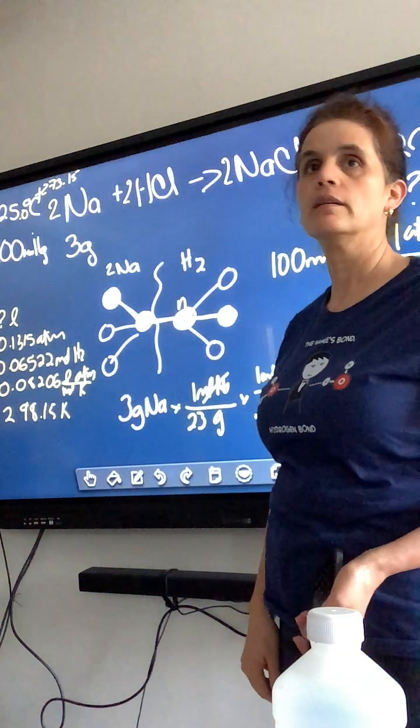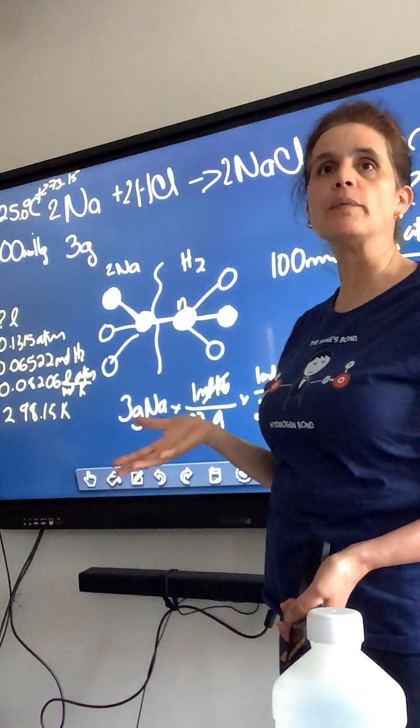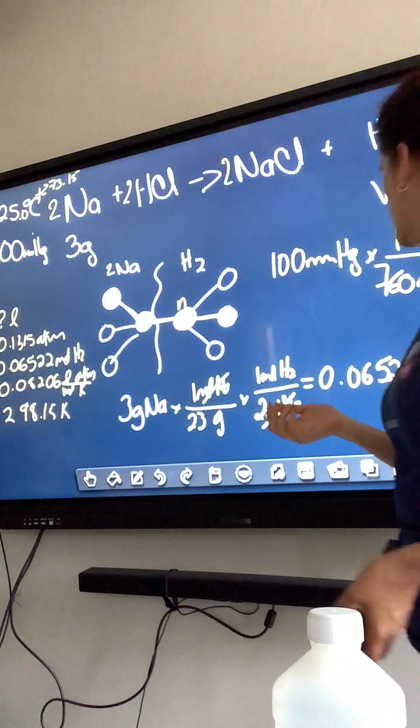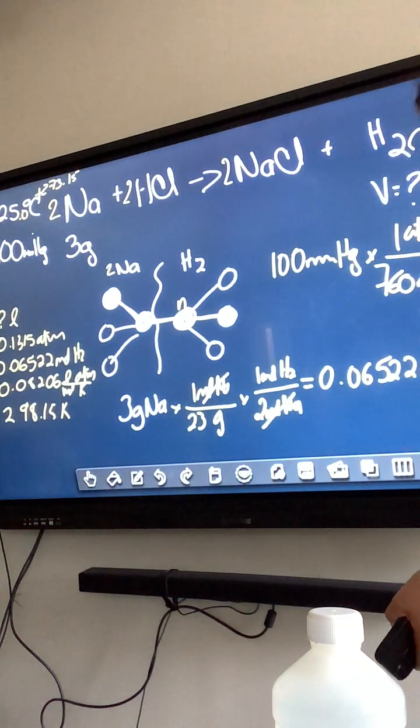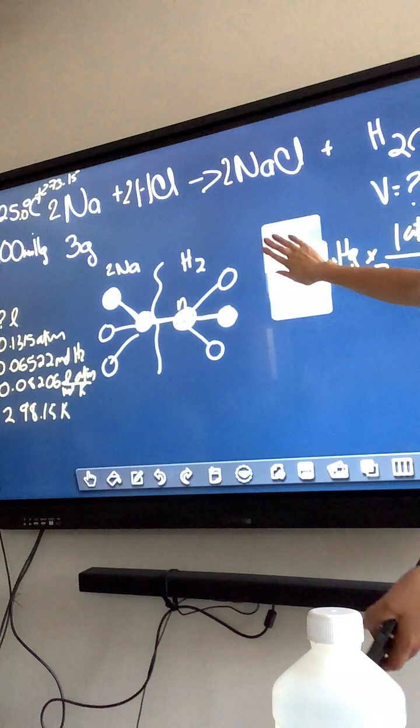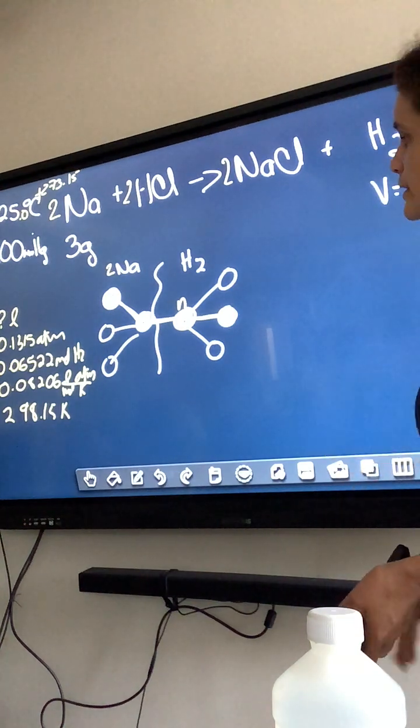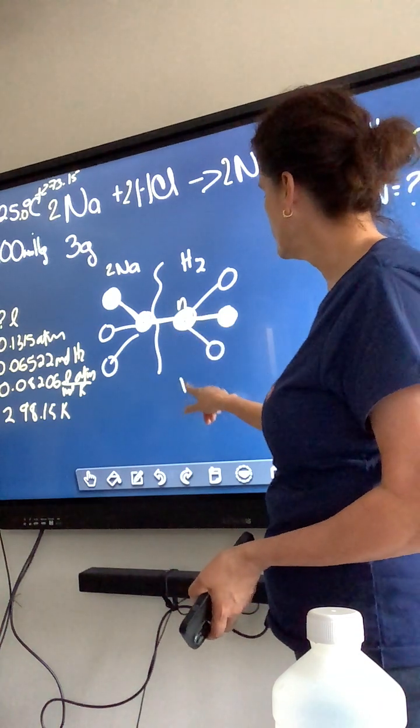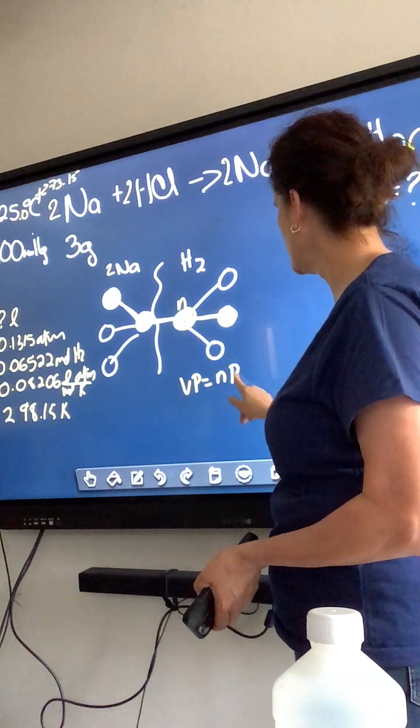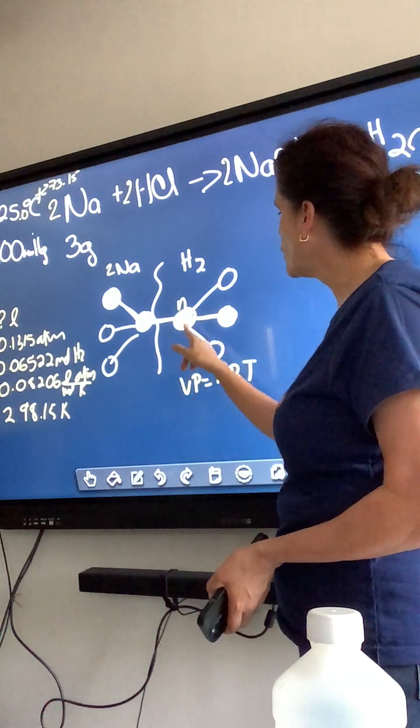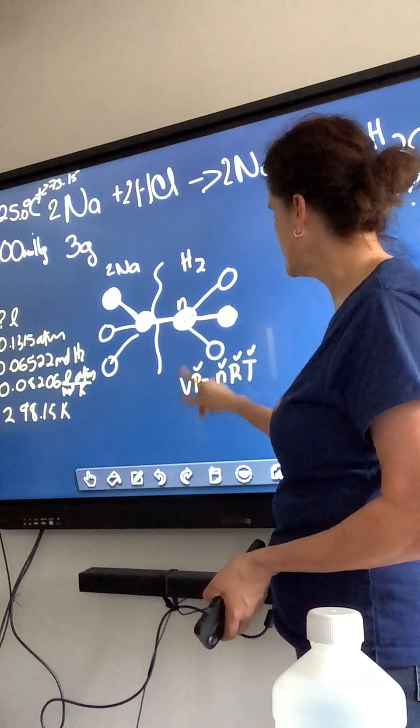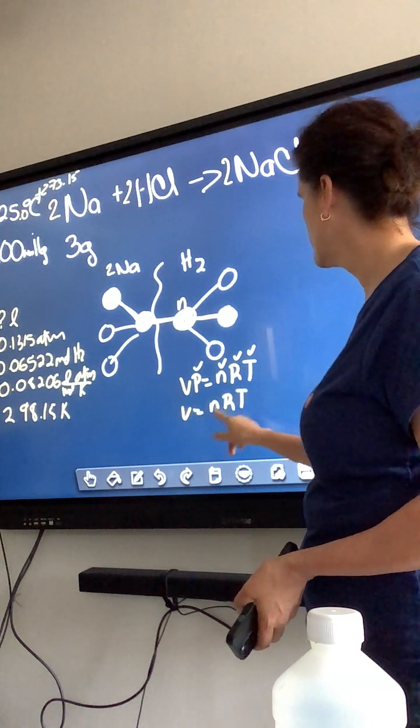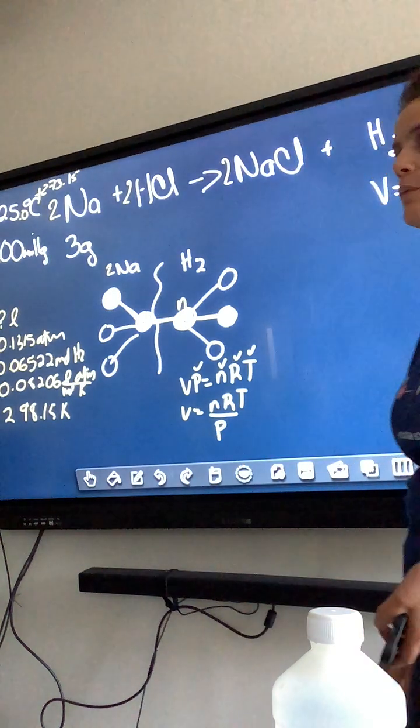298.15 Kelvin. Okay, so I have a board. I can erase everything just so that things are more clear. Now, I'm going to use my formula, PV equals NRT, but I am going to solve for V. V is equal to NRT over P. Everybody okay with that?